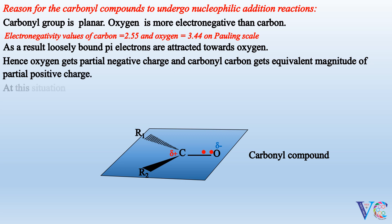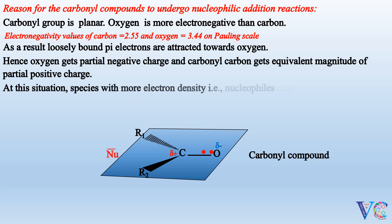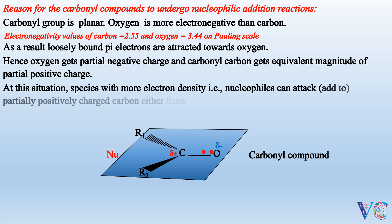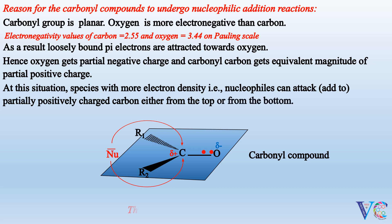In this situation, species with more electron density — that is, nucleophiles — can attack and add to the partially positively charged carbon, either from the top or from the bottom. This is nucleophilic addition reaction.